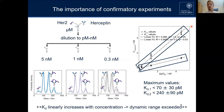By knowing this limitation, we define the maximum values: KD1 is below 70 picomolar and KD2 is stronger than 240 picomolar. So from this measurement, we know first of all the maximum affinity, but we also know the minimum affinity — how strong it actually can be or even stronger — as well as the stoichiometry of the interaction.